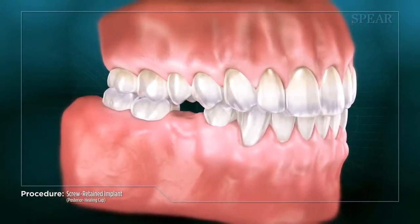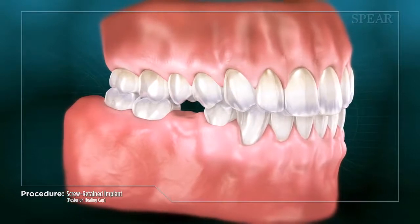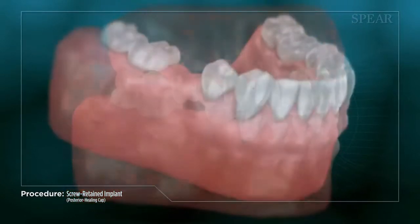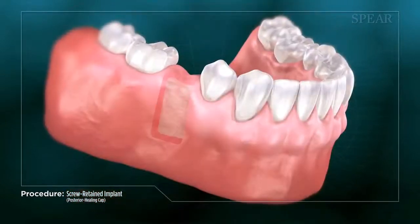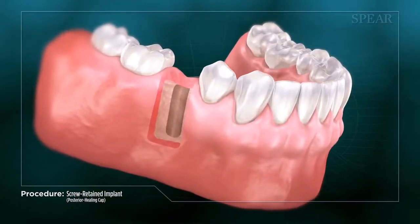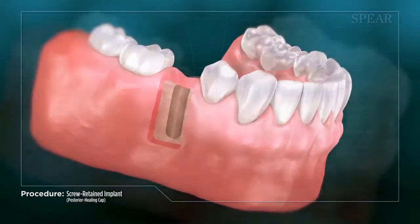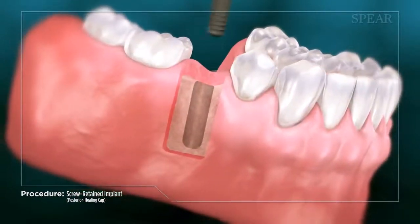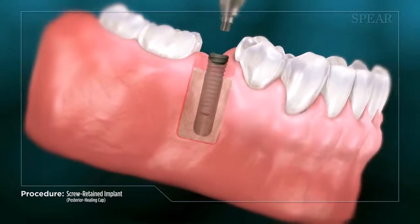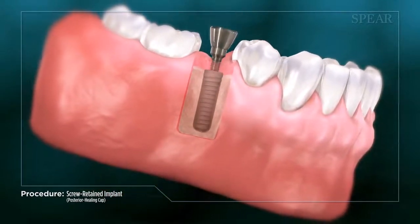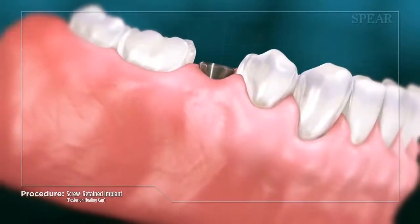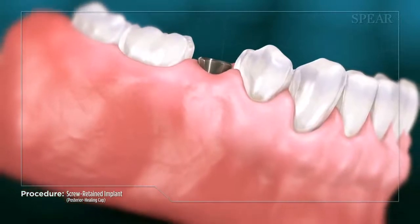It usually requires multiple appointments to complete a dental implant placement. First, the site is prepared for placing the dental implant. Second, the implant body is placed into the bone, along with a special healing cap. The site is then allowed to heal, providing a stable footing for the replacement tooth.